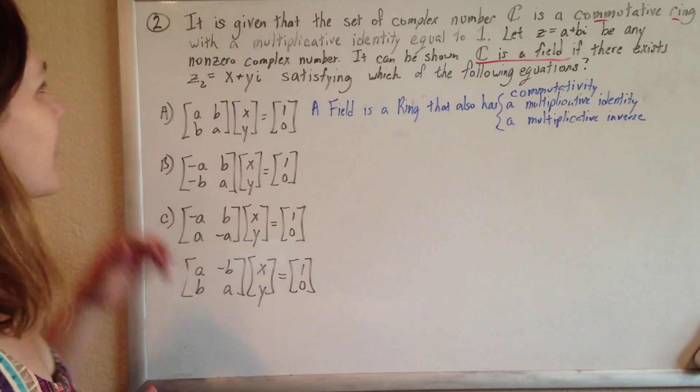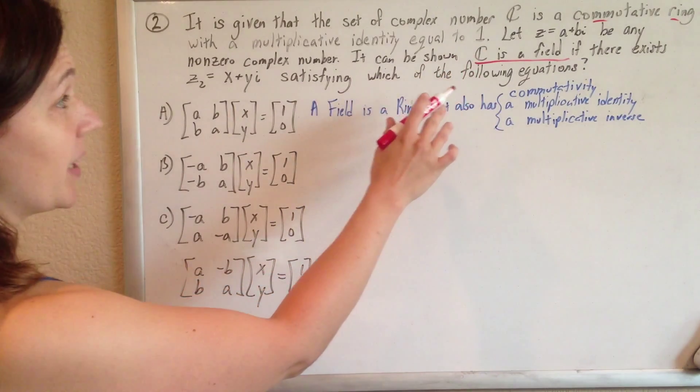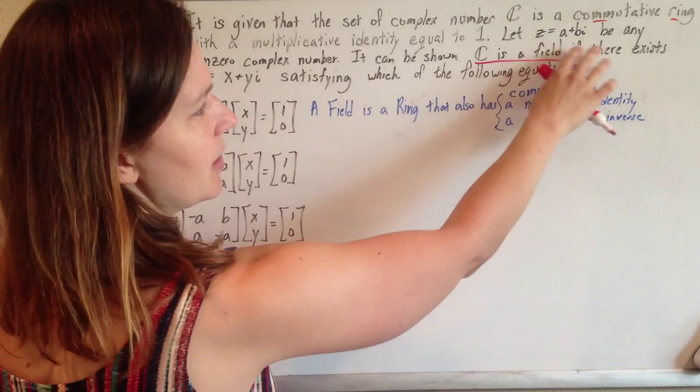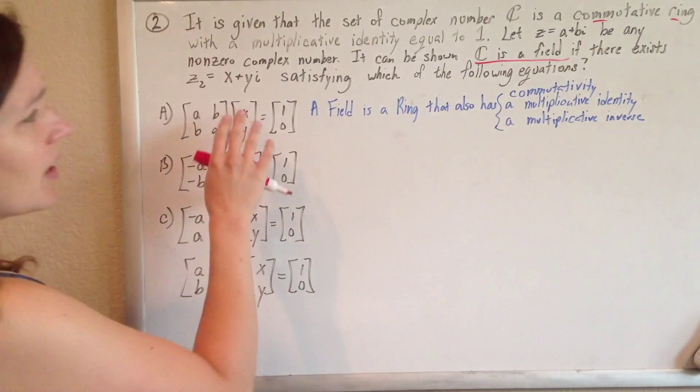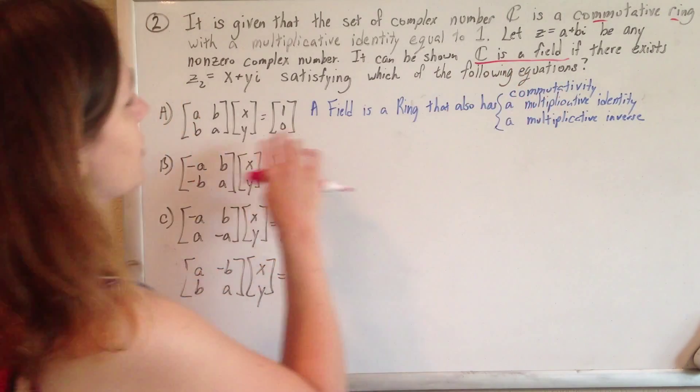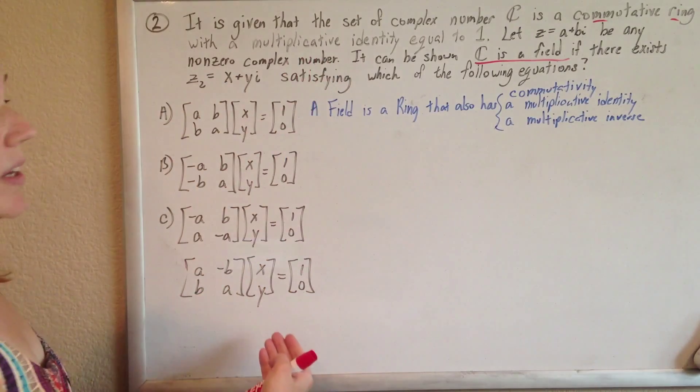All right, here we go. It is given that the set of complex numbers C is a commutative ring with the multiplicative identity equal to 1. Let z equal a plus bi be any non-zero complex number. It can be shown that C is a field if there exists z2 satisfying which of the following lovely equations.